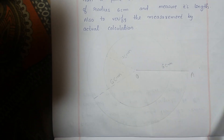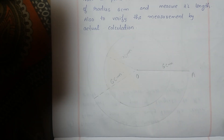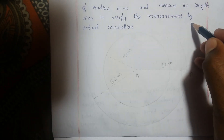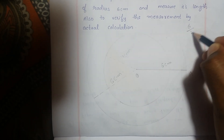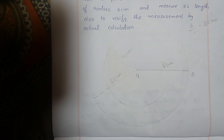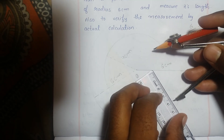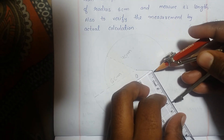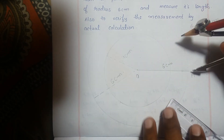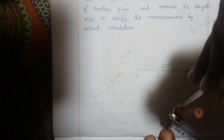Now draw the perpendicular bisector of line segment OA. The length is 6 cm, so half of it is 3 cm. Take a radius of more than 3 cm — I am taking 4 cm. Put the compass needle at A and draw one arc.